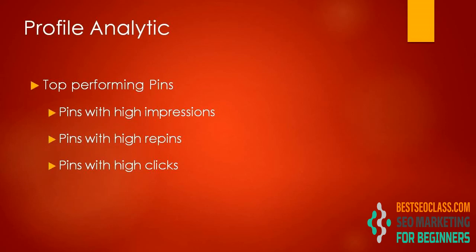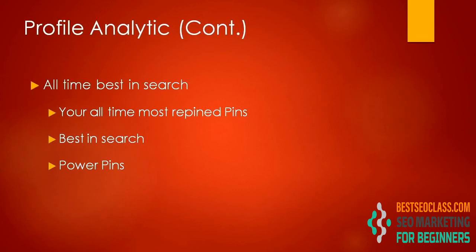The all-time report is based on all data Pinterest has from the beginning of your account. This includes your all-time most repinned pins, which helps you understand the content your followers are most interested in sharing and saving. The second metric is best in search — these are highly ranked pins in search. You can improve search quality rankings by writing clear and quality descriptions, using rich pins to categorize your pins, and making sure your entire pin links to useful websites. The last one is power pins — all-time high engagement pins combining likes, comments, and sends — which helps you understand which pins have the most interaction of all time.